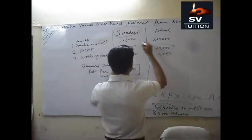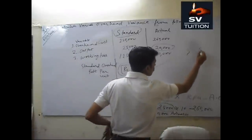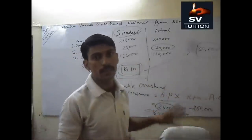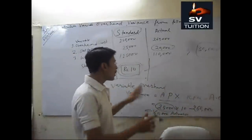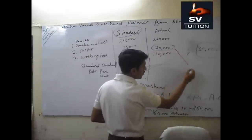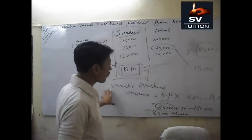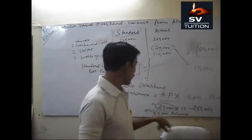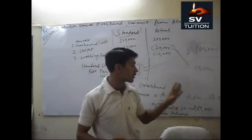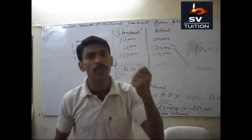So if production is at a rate of 10,000 units, then variable overhead variance will be: 10,000 into 10 equals 1 lakh, minus 2 lakh 60,000 — which means 1 lakh 60,000 will be an unfavorable variance, meaning we did not produce the goods we needed to.